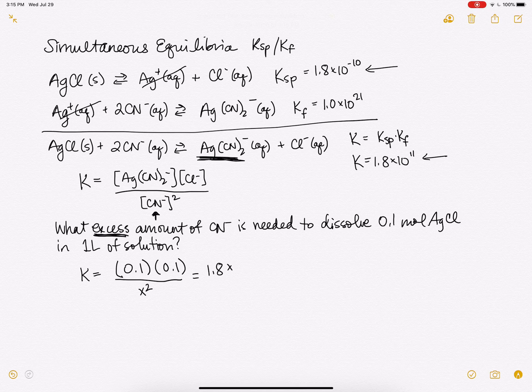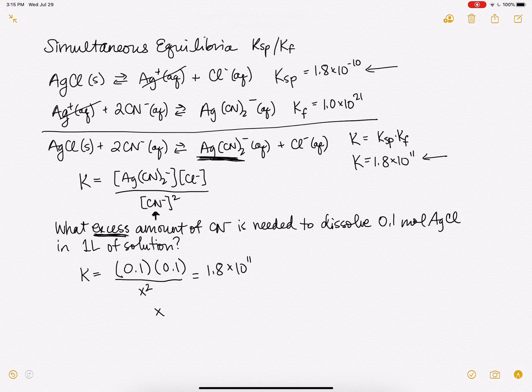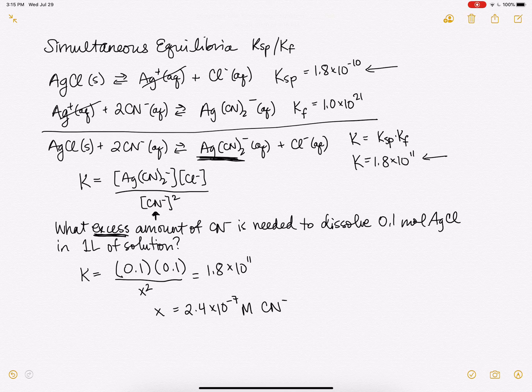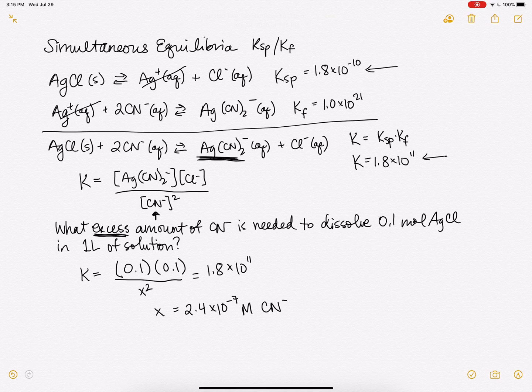And this equals 1.8 times 10 to the 11th. So when I solve for x, I get 2.4 times 10 to the minus 7th molar cyanide. And so this is our excess cyanide that's needed to keep our 0.1 moles of AgCl dissolved in solution.